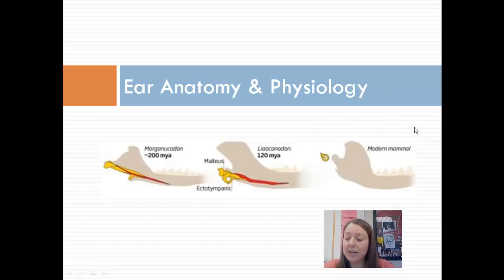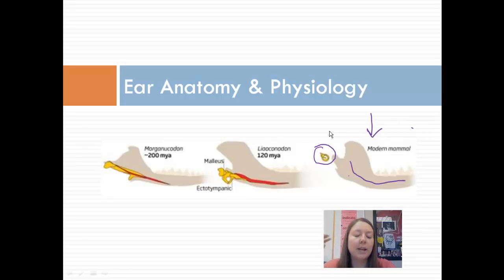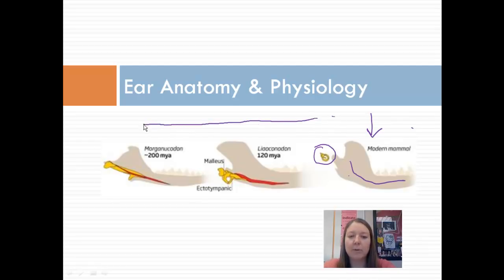I'd like to attract your attention to the far right diagram here. This is a diagram of the modern mammalian ear. You can see kind of where it sits. This is the mandible here, and these are the tiny ear bones that sit along the side near the temporal bone. They make up the three smallest bones in your body. What we see to the left of this picture are progressive changes in the mammalian ear over millions of years.